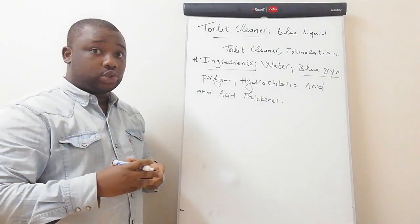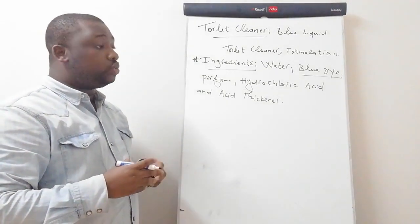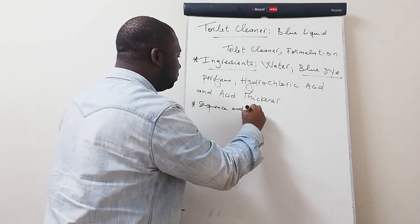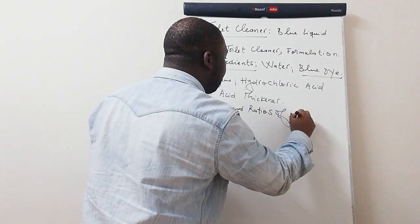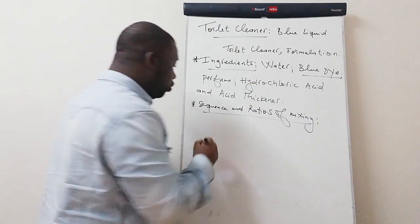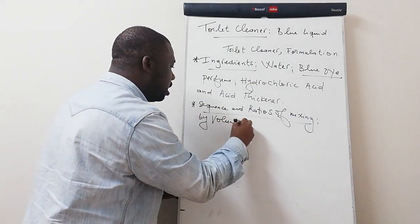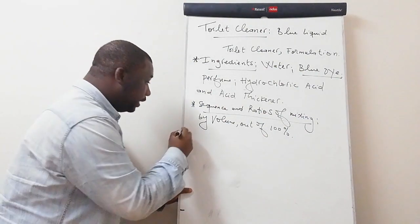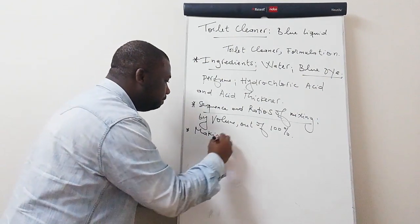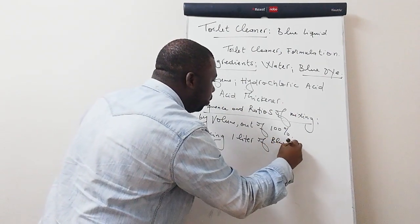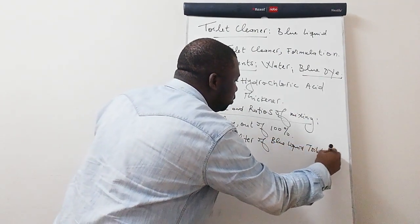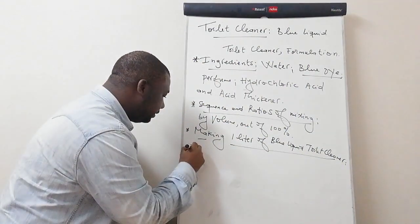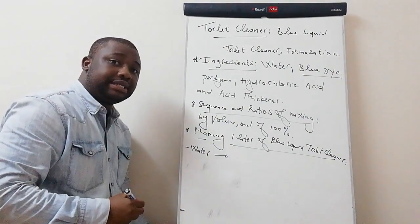Now let us get to the sequence and ratios of mixing ingredients, whereby I'm going to show you in which sequence to mix them and the related amount of each. This is done by volume, out of 100 percent. Let us consider manufacturing one liter of our blue liquid toilet cleaner. The first ingredient to consider is water — water should be 82% of your total volume.